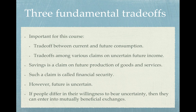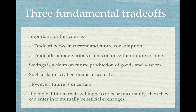The important trade-offs for this course are the trade-off between current and future consumption and trade-offs among various claims on uncertain future income. In financial economics, from a macroeconomic point of view, when you save it is like having a claim on future production of goods and services, because your savings finance capital goods production in the economy, which augments our capacity to produce goods and services in future. Such a claim is called a financial security — it could be as simple as a bank deposit, a stock in companies like Facebook or Apple, a bond issued by a government or companies like Microsoft, Ford, or Honda, or a unit in a mutual fund.